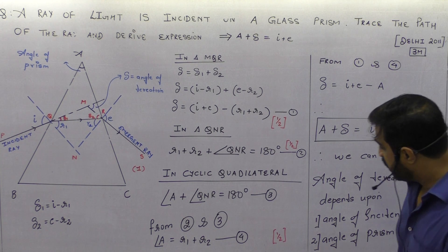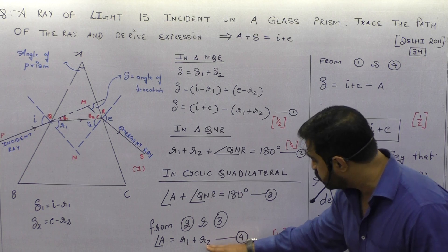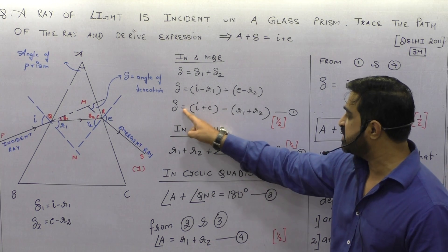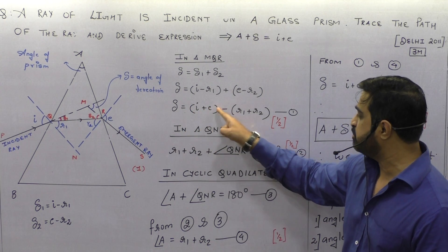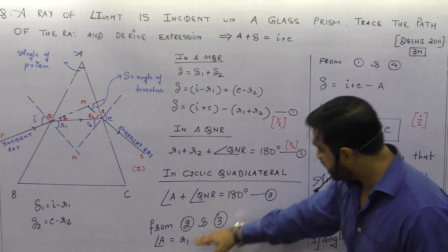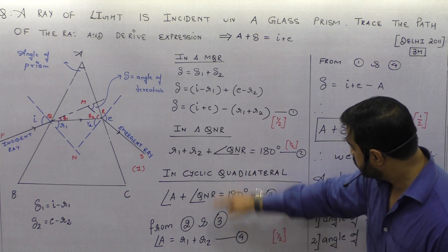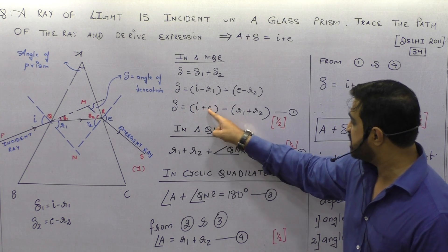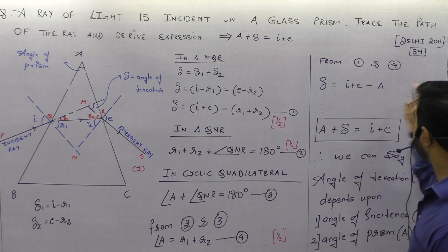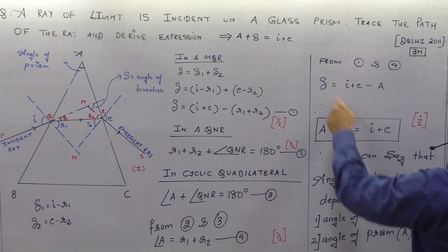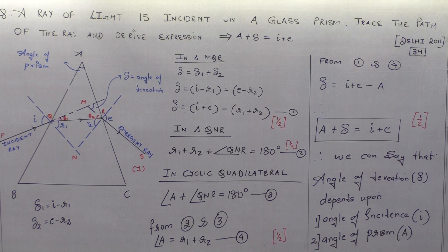We now know that A equals r1 plus r2. Looking at equation 1, delta equals i plus e minus (r1 plus r2). Substituting A for r1 plus r2, delta equals i plus e minus A, and therefore A plus delta equals i plus e.